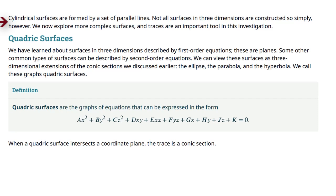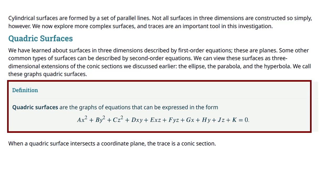Not all surfaces in three dimensions are made so simply, so now we're going to move on to more complex surfaces — traces are a very important tool here. By definition, quadratic surfaces are the graphs of equations that can be expressed in the form ax² + by² + cz² + dxy + exz + fyz + gx + hy + jz + k = 0.